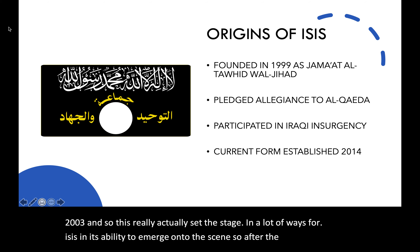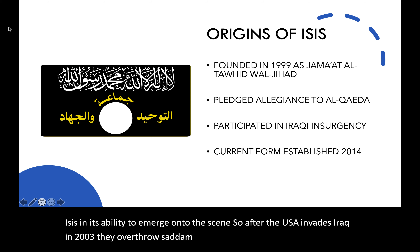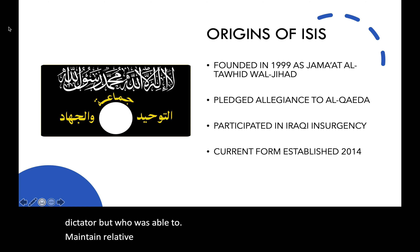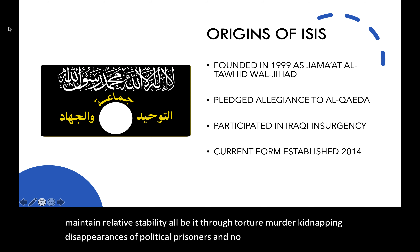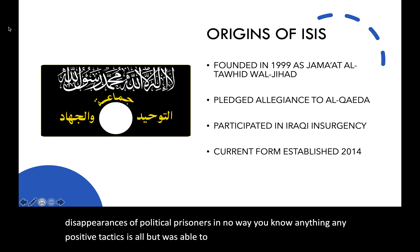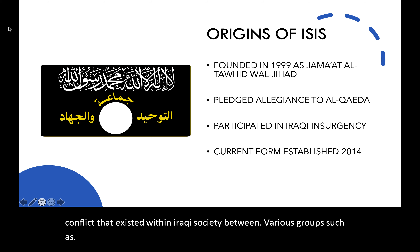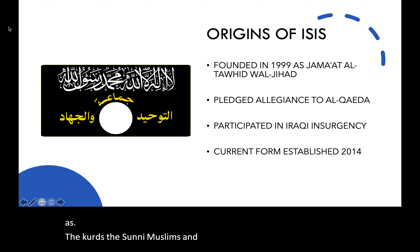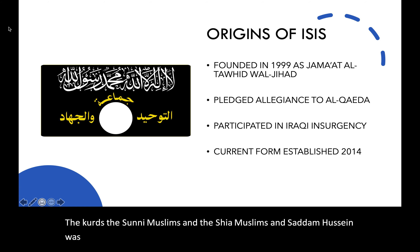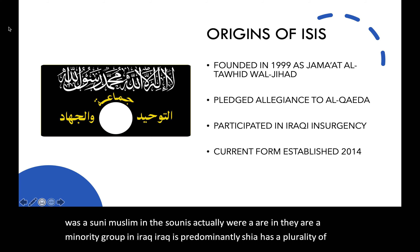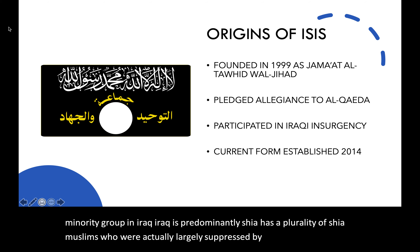After the U.S. invades Iraq in 2003, they overthrow Saddam Hussein, who was a brutal, repressive dictator, but who was able to maintain relative stability — albeit through torture, murder, kidnapping, and disappearances of political prisoners — and was able to control conflict within Iraqi society between groups such as the Kurds, the Sunni Muslims, and the Shia Muslims. Saddam Hussein was a Sunni Muslim, and the Sunnis were actually a minority group in Iraq. Iraq is predominantly Shia, with a plurality of Shia Muslims who were largely suppressed by Saddam Hussein's Sunni minority.